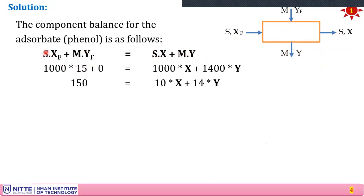Substituting values — S = 1000, xf = 15, yf = 0 — the balance in grams of pigment gives: 1000×15 + 0 = 1000×x + 1400×y. We have used S = 1000 on both sides on a solute-free basis, since the pigment is at low concentration and changes in total quantity are small. This introduces a minor error but it is very low.